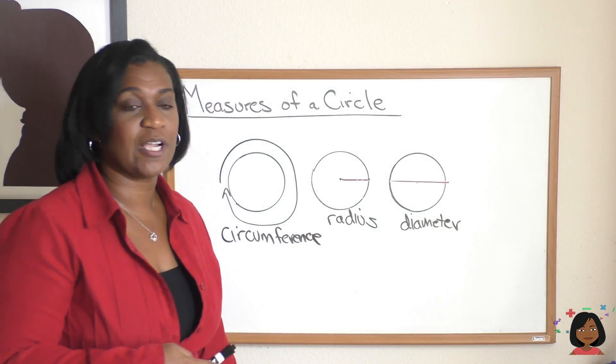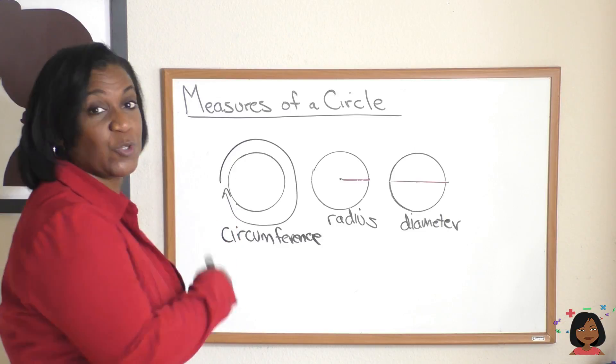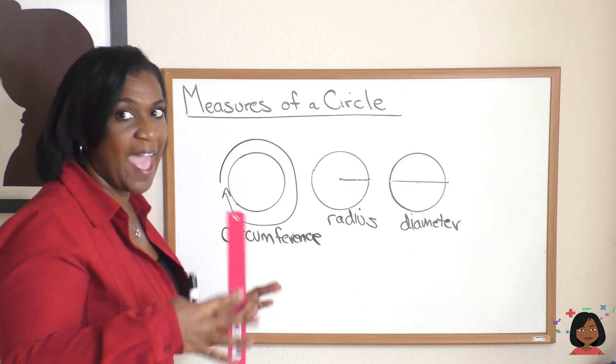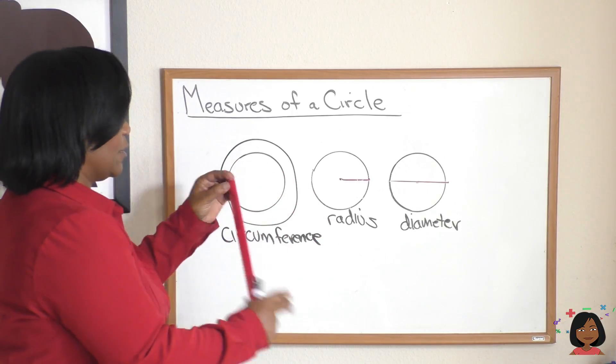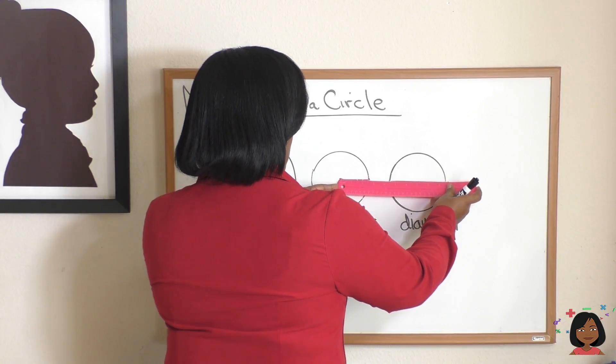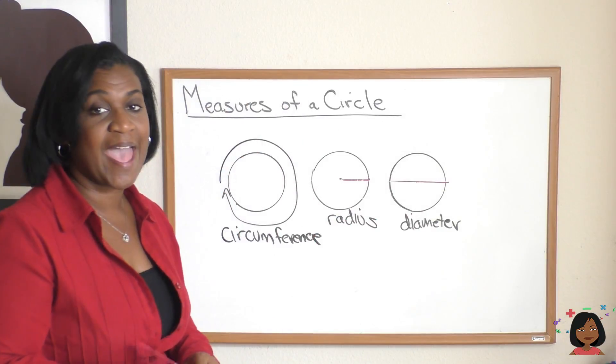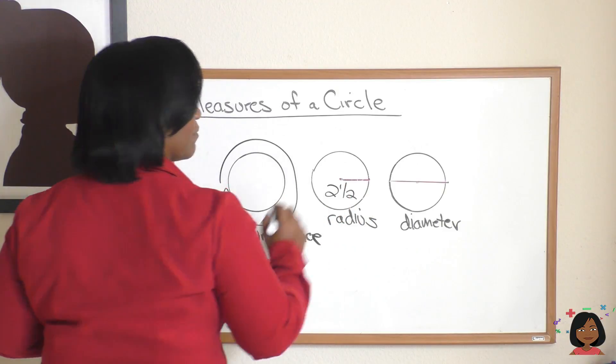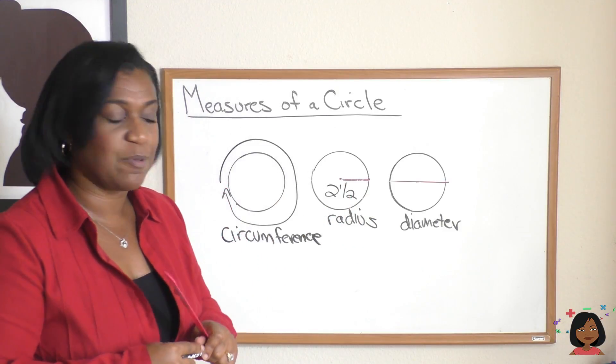So let's take a look at the actual measurements of this, just to prove that it really is. Radius is half of the amount of the diameter. So I'm going to use my little ruler here. If I were to measure this radius, it would be two and a half inches.